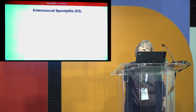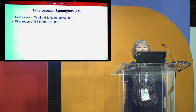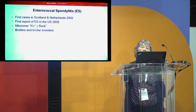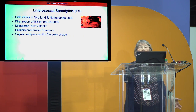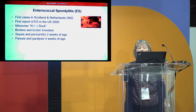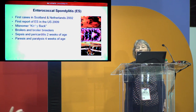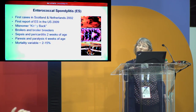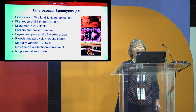This disease, Enterococcus spondylitis, was first described in Scotland and the Netherlands in 2002, and not until 2009 did it appear in the U.S. when doctors Barnes and Aziz described cases in North Carolina. It had the misnomer 'kinky back' early on. It affects broilers and broiler breeders, and birds can present at two weeks of age with sepsis and pericarditis. At four weeks, paresis and paralysis begin to appear. The mortality can range from two to fifteen percent, with additional losses from condemnation at processing. There is no effective antibiotic-free treatment and no preventative.